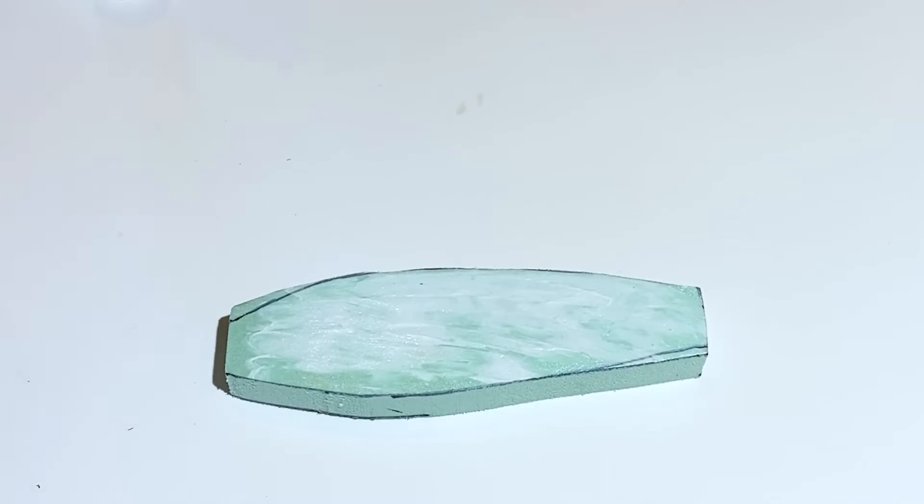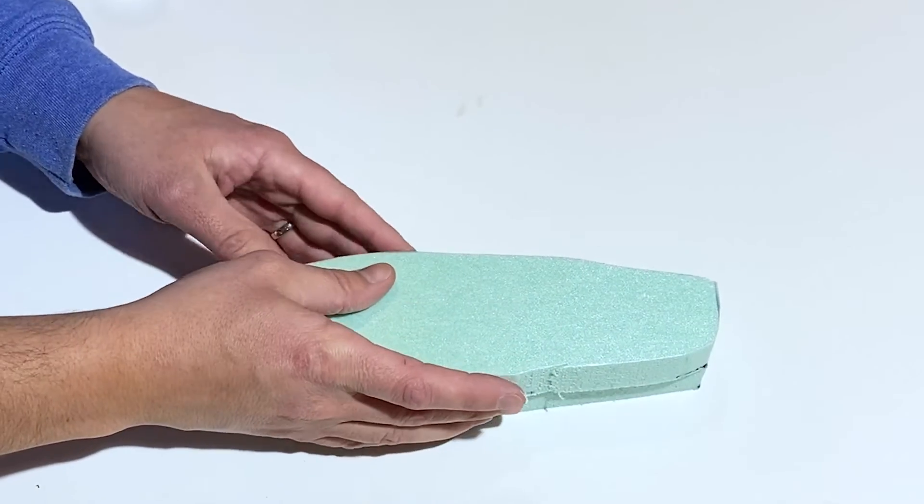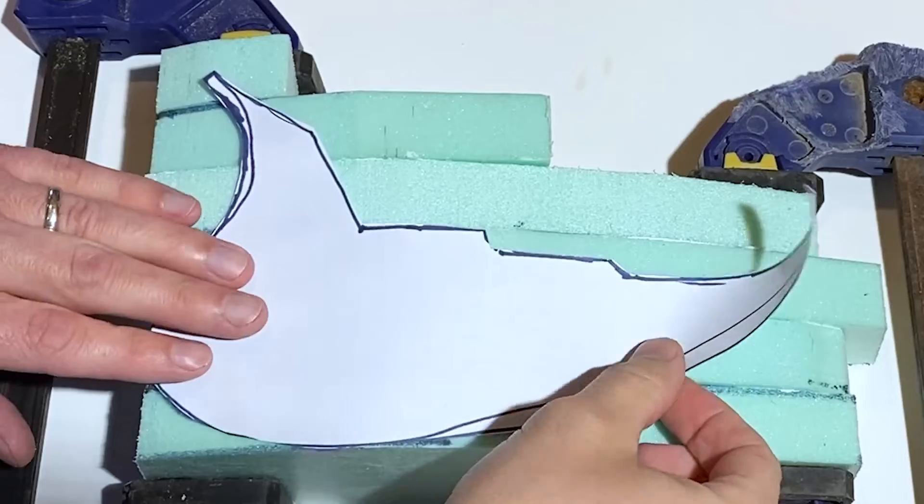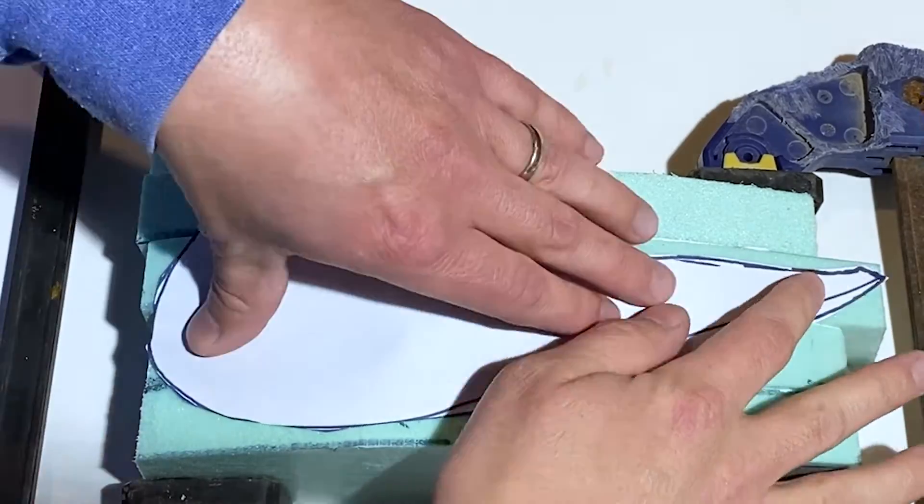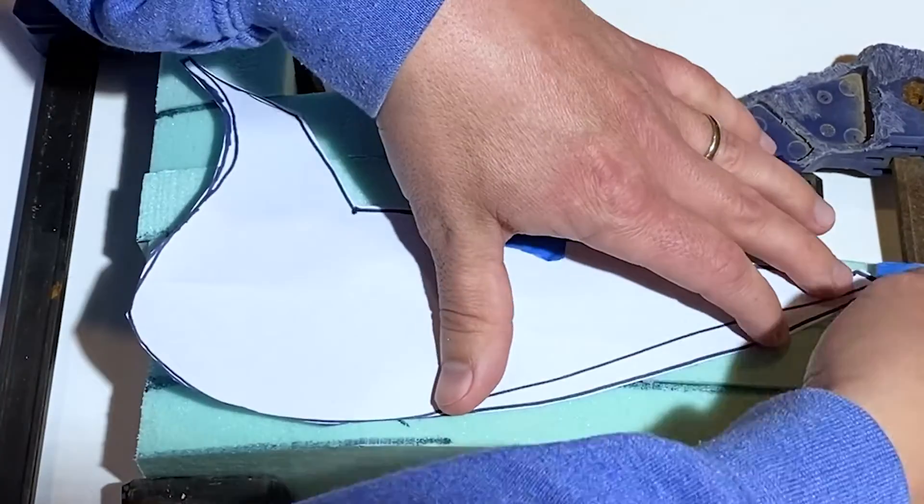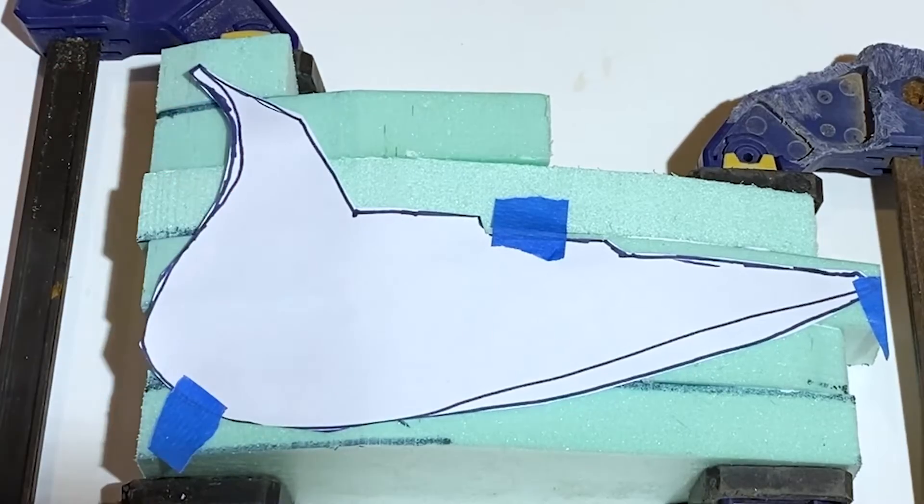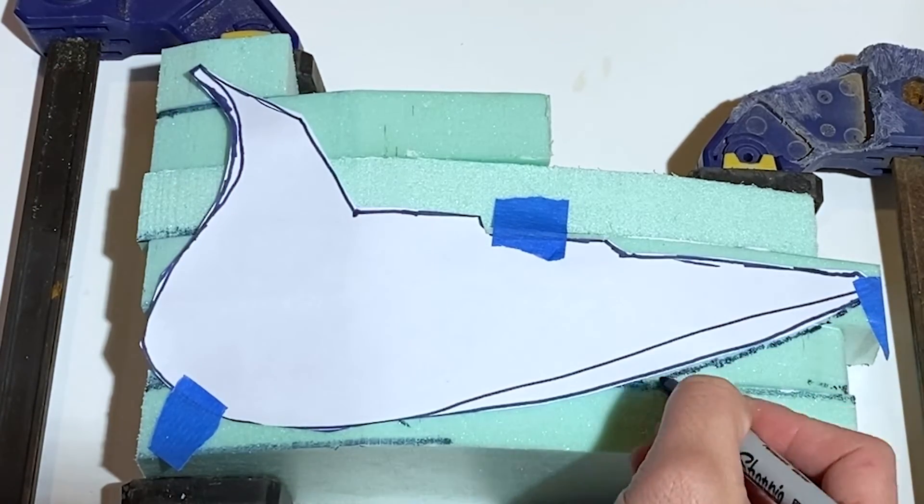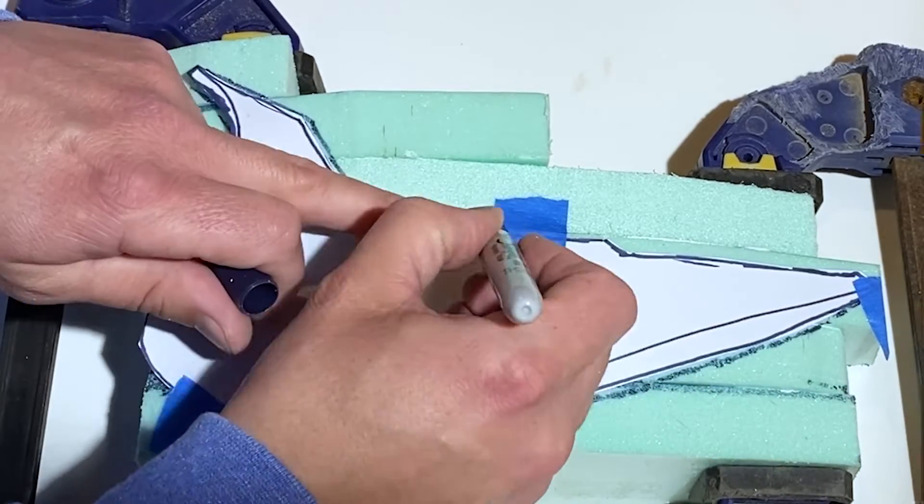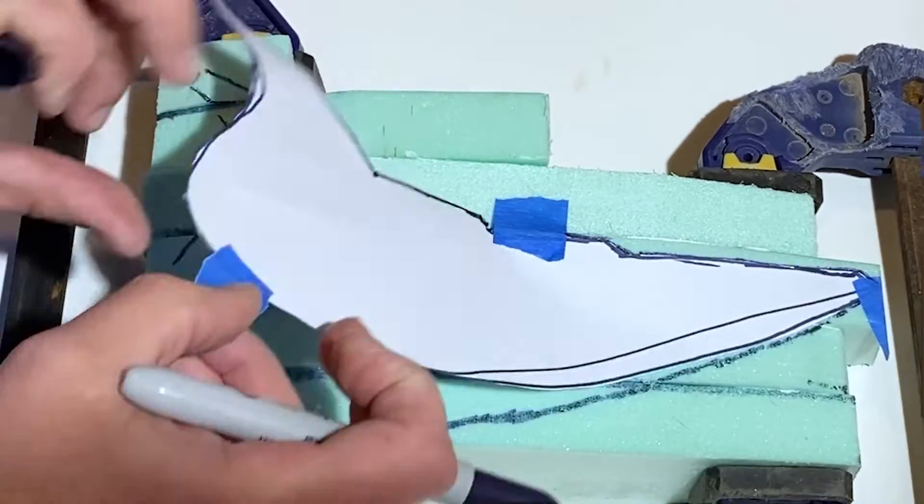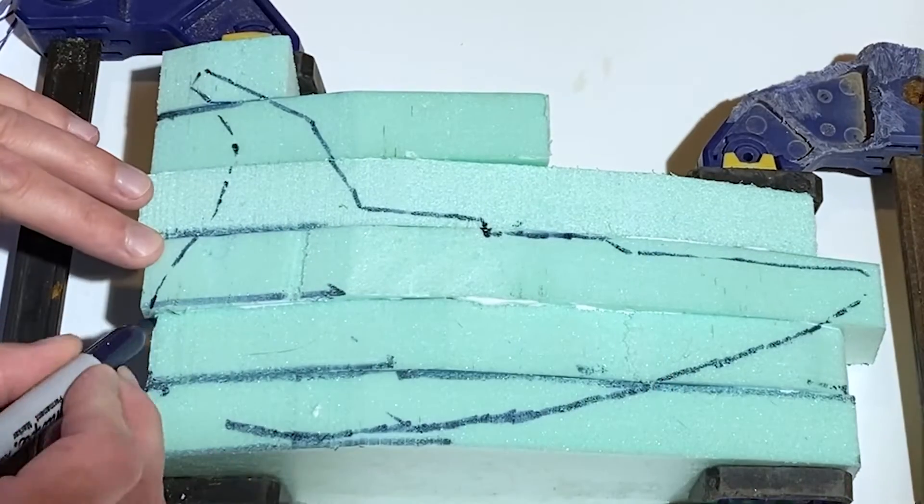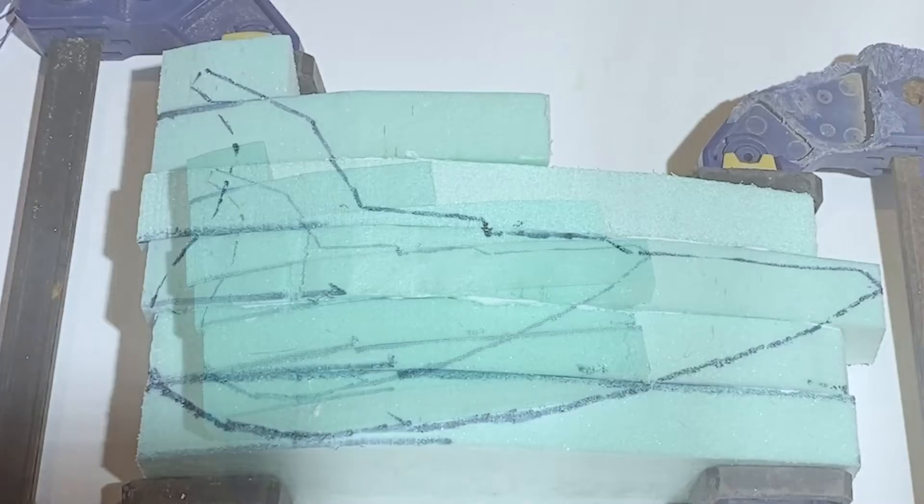And then glue everything together with styro glue. And here's the side profile. When we cut that out, we'll have a pretty nice blank for a ship hull that will need to be smoothed out, of course.